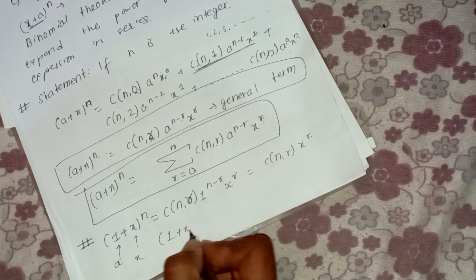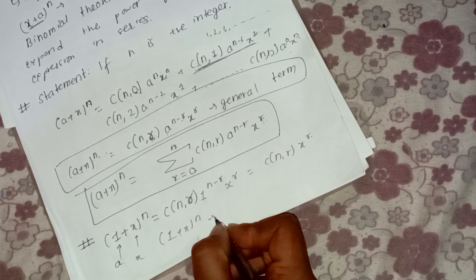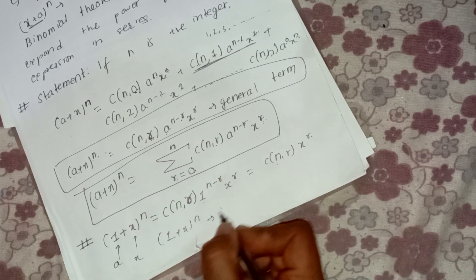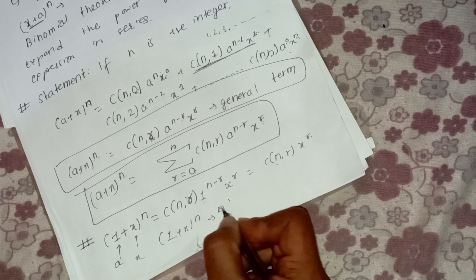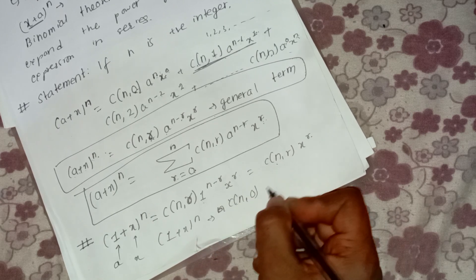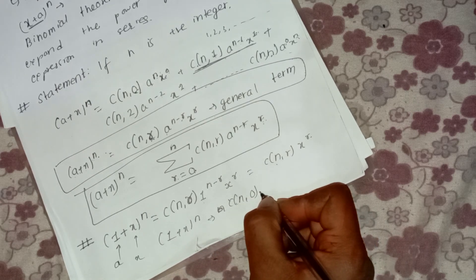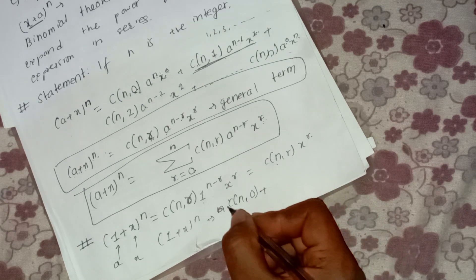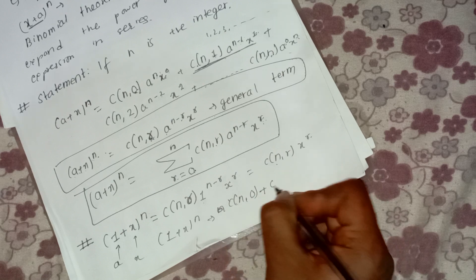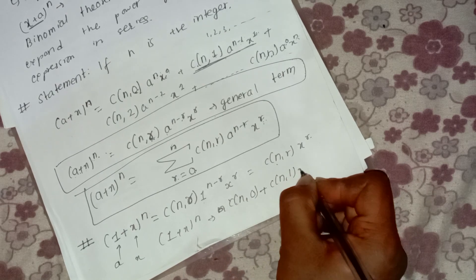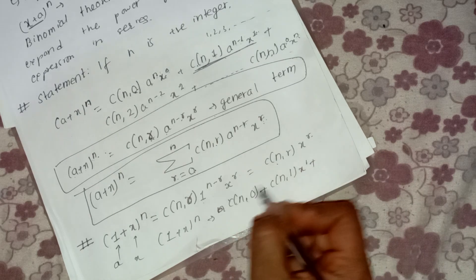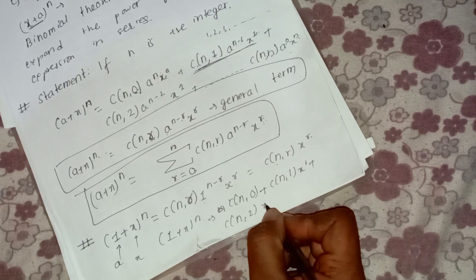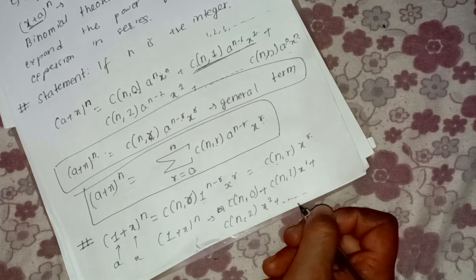If we expand (1 + x)^n, we get: C(n,0) times x to the power 0, plus C(n,1) times x to the power 1, plus C(n,2) times x to the power 2, and so on continuing in this way.